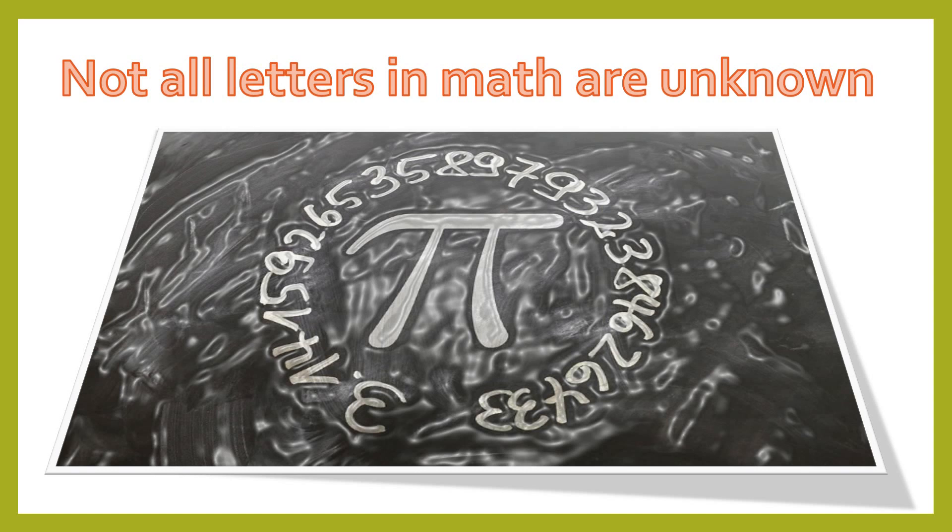Now, not all letters in math are unknowns. For example, pi. Pi is a really good example because we know exactly what pi is. It's an irrational number. You can't really write it out. You can only approximate it. So we use the Greek letter pi to represent the number pi. No big deal. See, letters are used in math all the time.